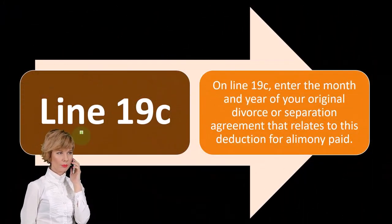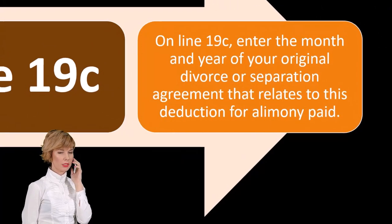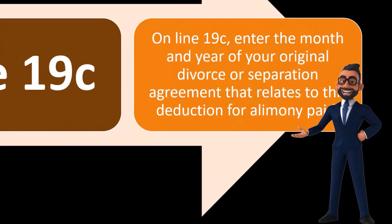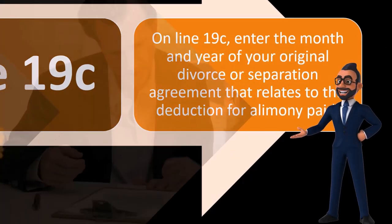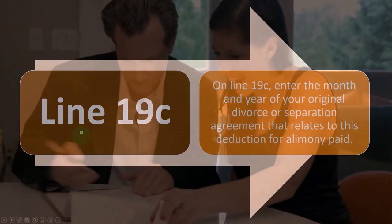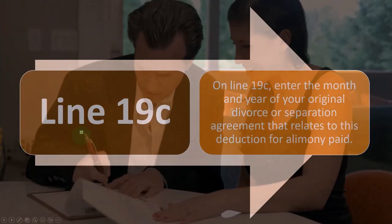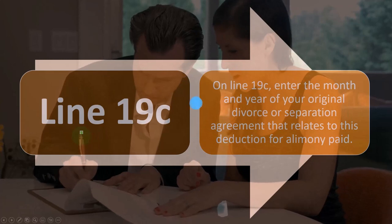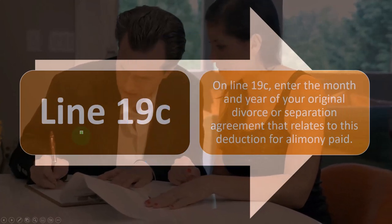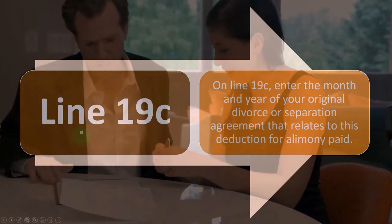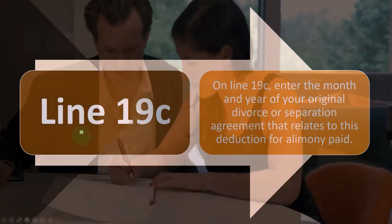On line 19c, enter the month and year of your original divorce or separation agreement that relates to this alimony deduction, so the IRS has the information to confirm that the agreement predates the December 31st, 2018 cutoff date.